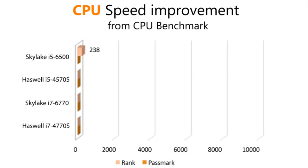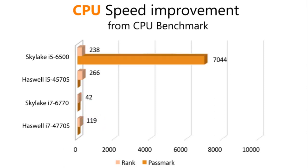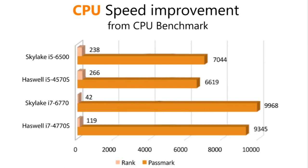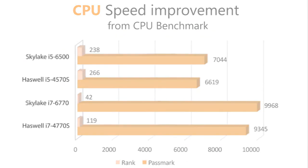The first set of results we see is the rank. This shows where the CPU sits when compared against all tested processors, be it Intel, AMD or ARM. The increase in rank is more evident when comparing the Intel Haswell i7-4770S and the Intel Skylake i7-6770. The second set of results is the score generated from the test suite. With this greater CPU performance comes a new generation GPU, which we shall review next.